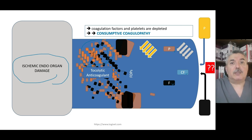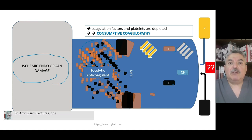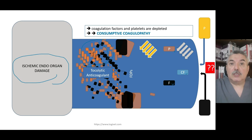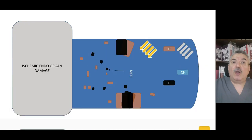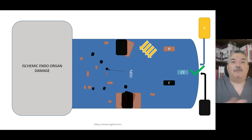Some doctors give platelets for low platelets, fresh frozen plasma for a prolonged PT, and replace fibrinogen. But what have you gained? Nothing. You gave the body fuel — you are adding fuel to the fire. The body takes the clotting factors, fibrinogen, and platelets, reforms blood clots, the fibrinolytic system breaks them again, increasing organ damage and fibrin degradation products. The correct solution is to remove thromboplastin from the equation — treat the cause. After treating the cause, you can then replenish platelets, fresh frozen plasma, and cryoprecipitate. But you must treat the cause first.